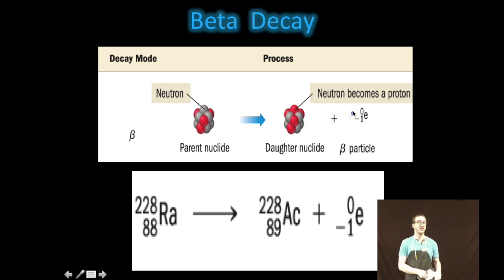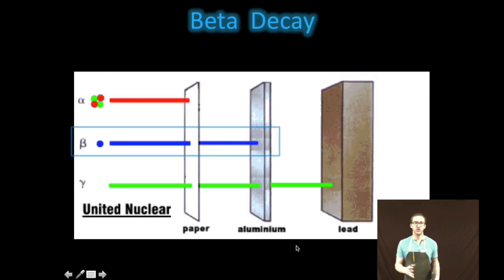As you look at the equation, notice that with beta decay the mass stays the same, but by converting a neutron to a proton, we do change the element that we're working with. As you think about comparing beta decay to some of the other types of radioactive decay, it's sort of an intermediate when it comes to its penetrating power—will penetrate more strongly than alpha particles but less so than gamma radiation.